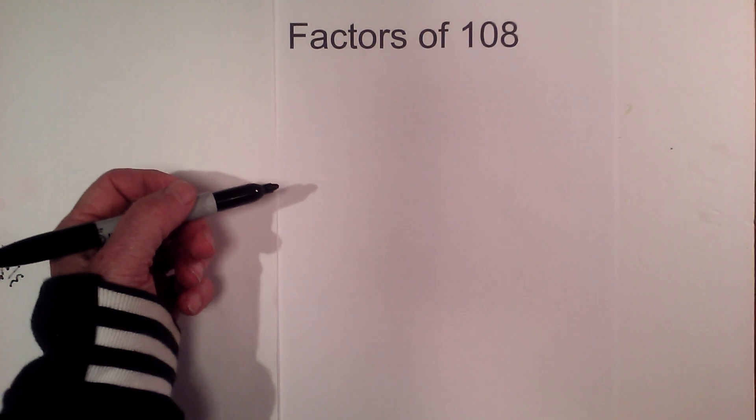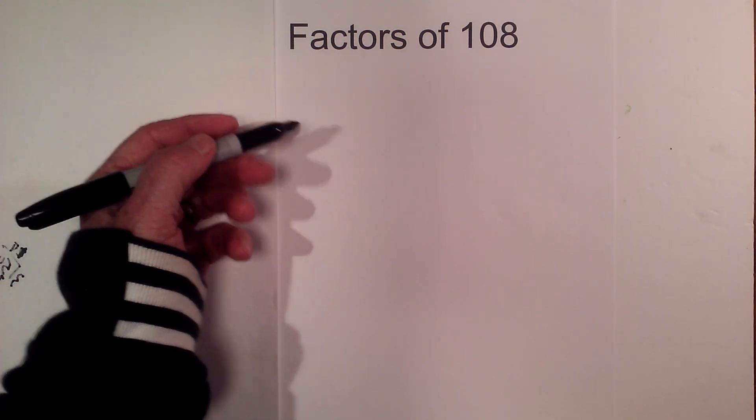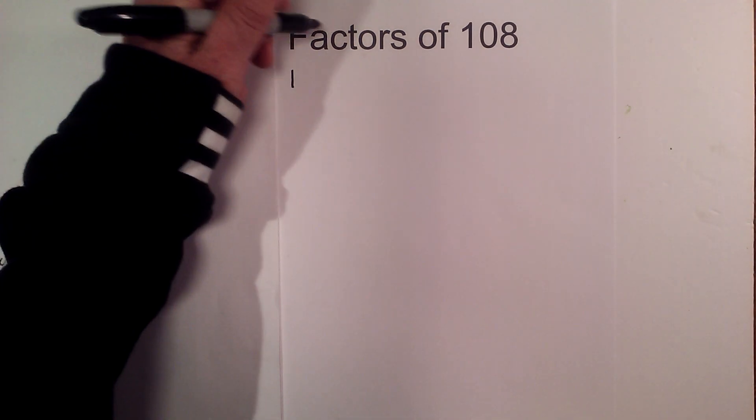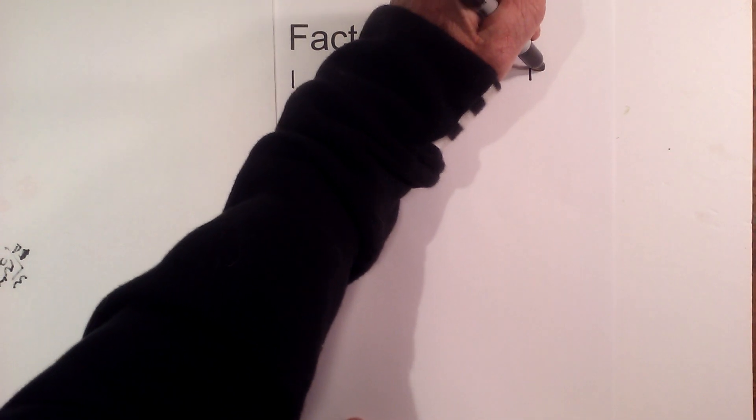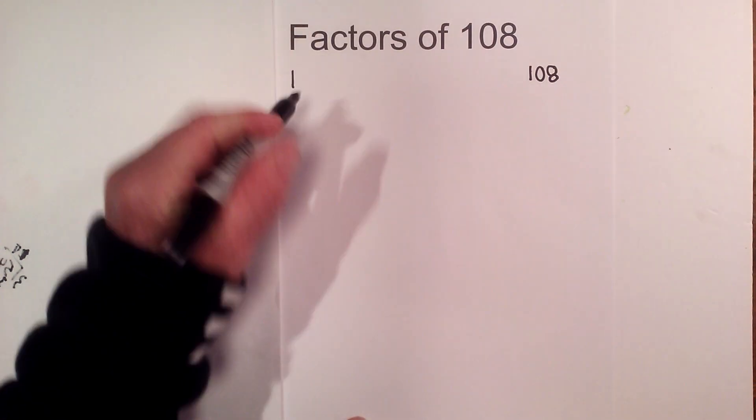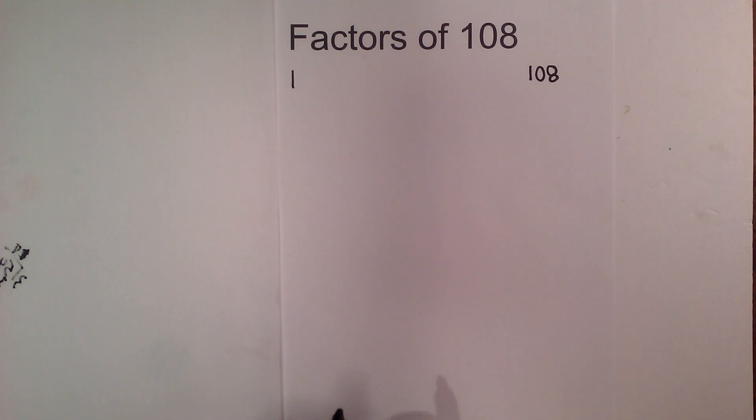108 is a composite number, which means that it's divisible by numbers other than 1 and itself. So what I'm going to do is write 1 and 108 because I know 1 times 108 equals 108.